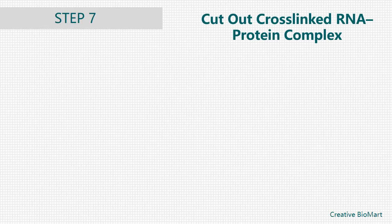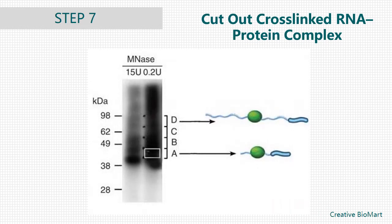Step 7, Cut Out Cross-linked RNA-Protein Complex. The RNA-protein complexes run at approximately the combined molecular weight of the protein and RNA. Using a scalpel blade, cut out this band, and then cut the nitrocellulose into small pieces. Place these pieces into a single clean tube.